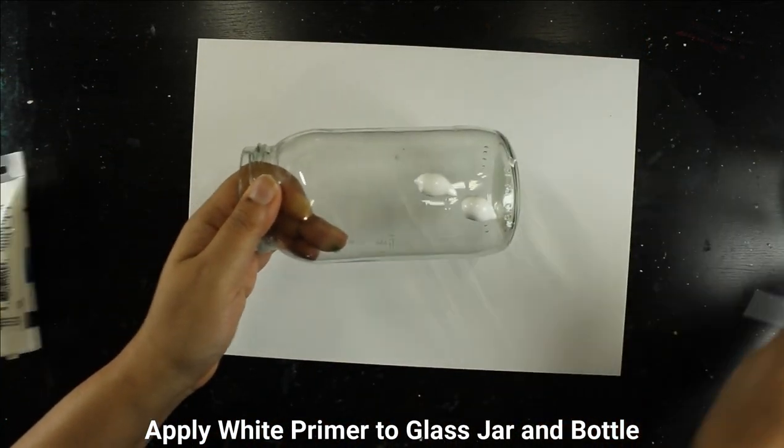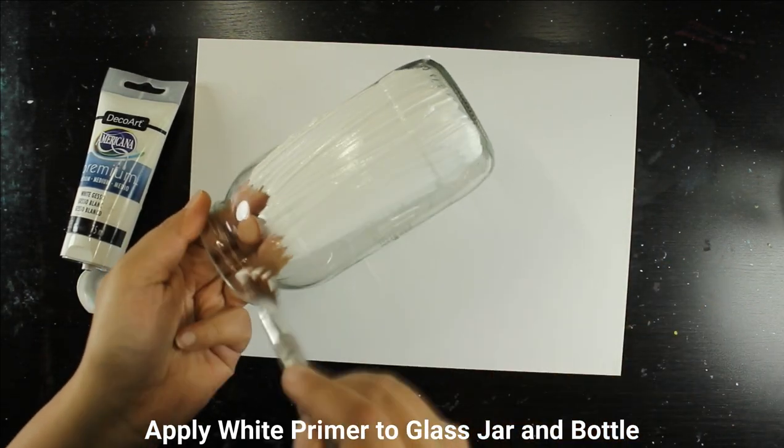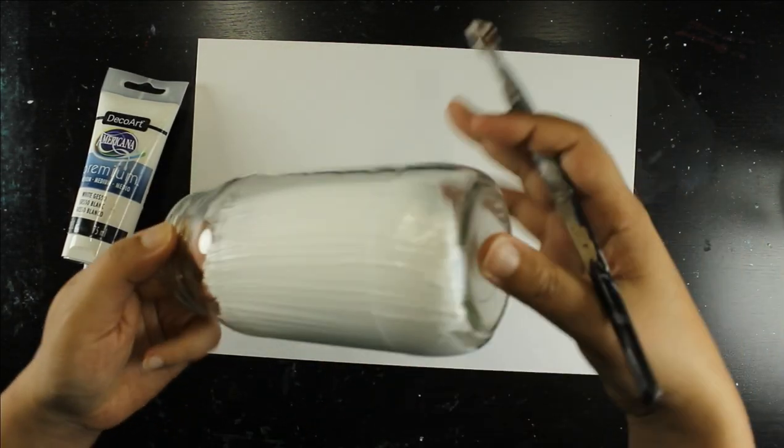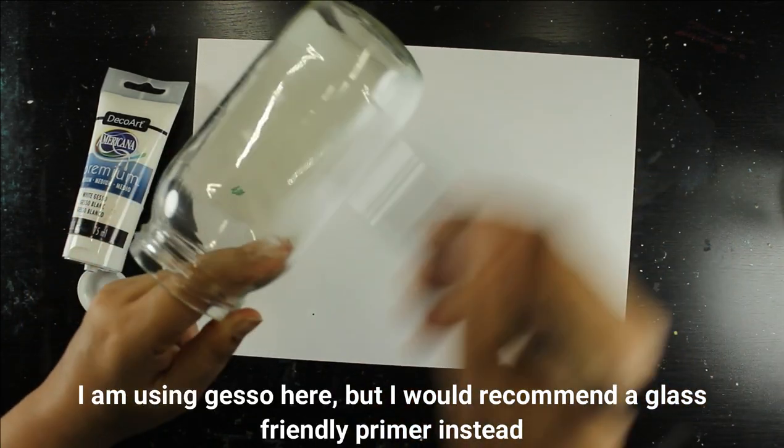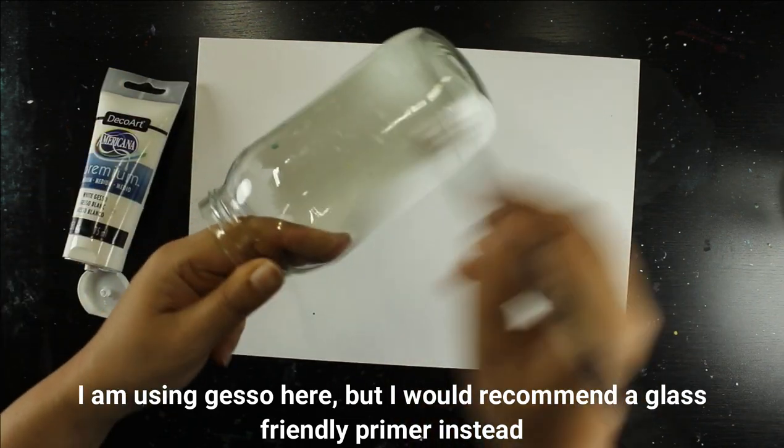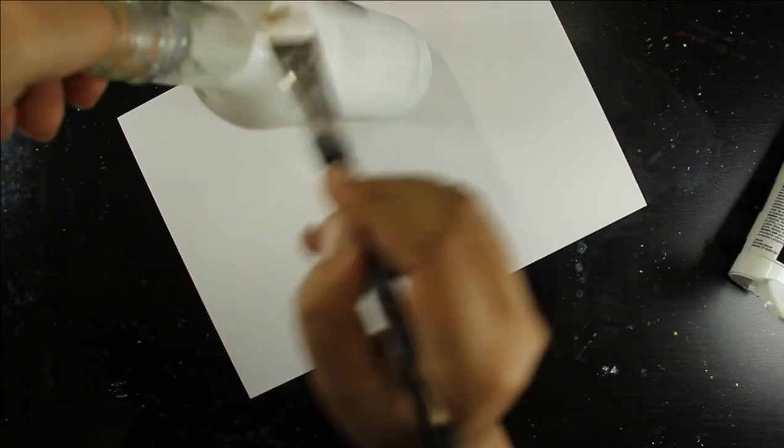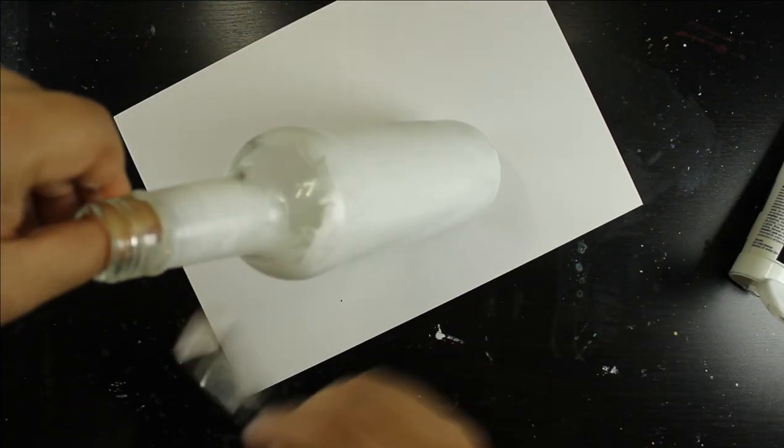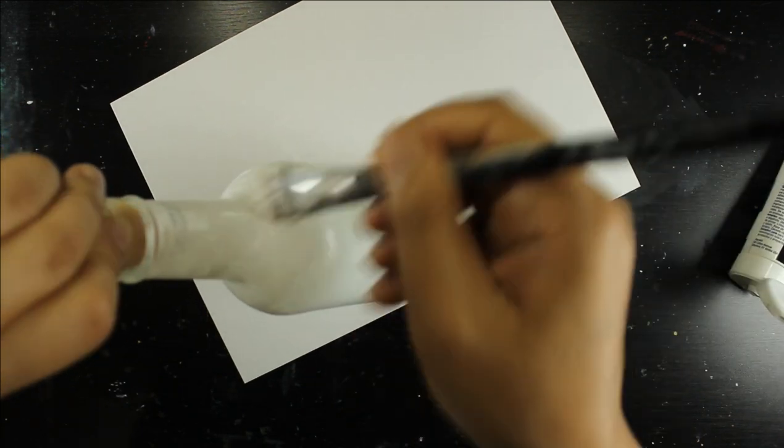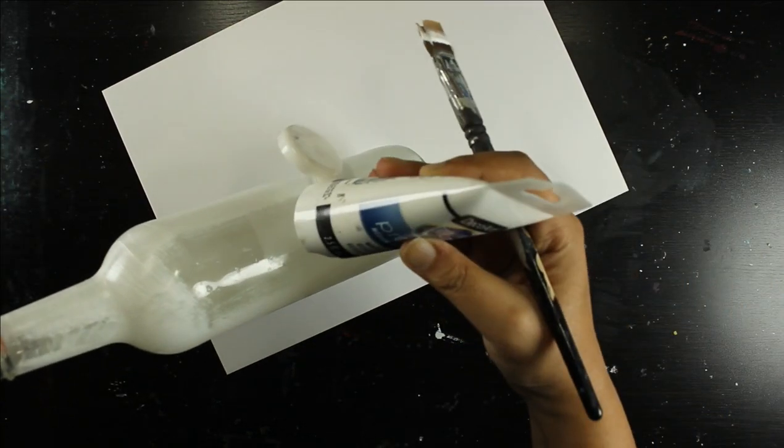So to start off, I had already taken off all the labels of my glass jar and my bottle and I'm applying some gesso to my jar so that I have a white base to work on. Now I would suggest that instead of gesso you use some sort of paint or primer that would adhere to the glass better because as I was finding during the gel printing process that some of the gesso was coming off.